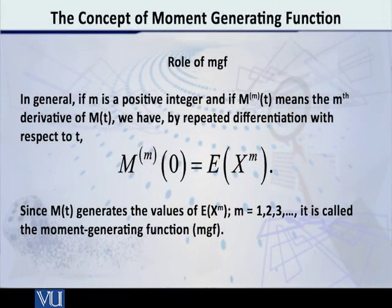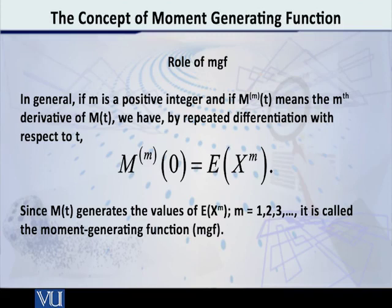One way to achieve moments through the MGF is that you derive your MGF, then you take the first derivative of your MGF, then you evaluate it at t equal to 0 — and that result is going to be the expected value of x, the first moment about 0, i.e., the mean of the distribution.